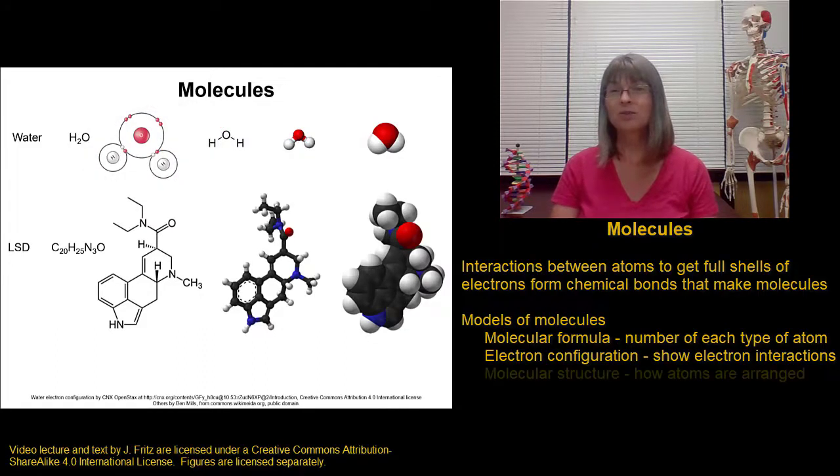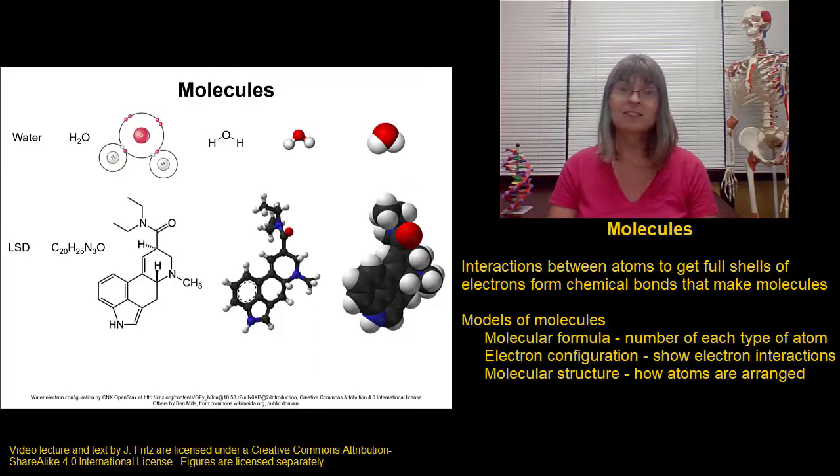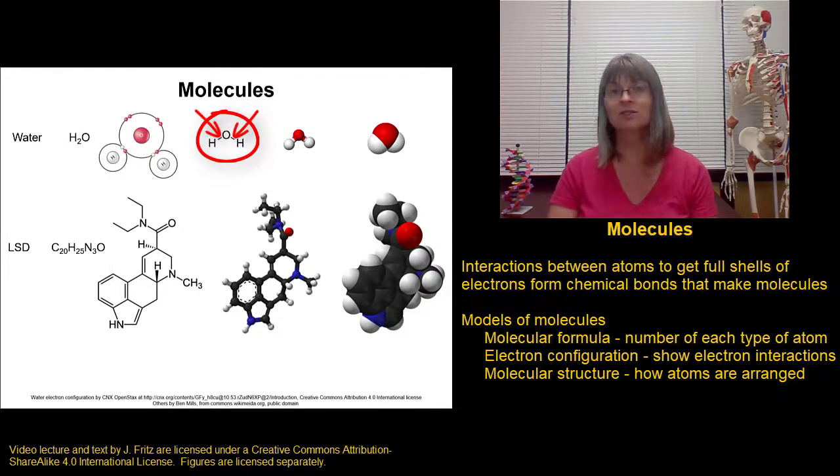We could look at a molecular structure model, like this, that gives us an idea of which atoms are connected to each other. We use the symbols for the elements and where they're connected with a line that represents a bond between those atoms. So here is a molecule of oxygen and you can see that there are lines connecting it to two hydrogens. So this is showing us the structure of water. Both of the hydrogens are connected to the oxygen.